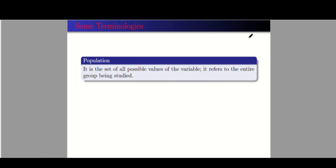Now let's review some terminologies. When we say population, it is the set of all possible values of the variable, or it refers to the entire group being studied. For example, during an election, the population is the total overall number of voters.